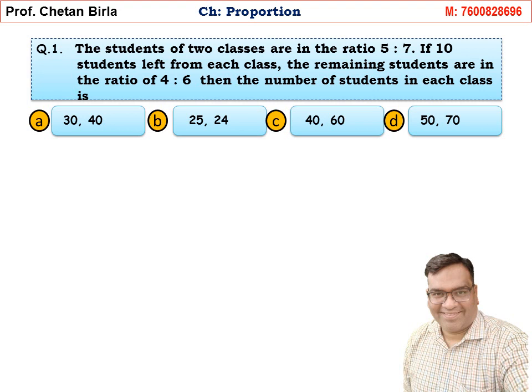Question 1: The students of 2 classes are in the ratio 5 is to 7. If 10 students left from each class, the remaining students are in the ratio of 4 is to 6. Then the number of students in each class is — Options A, B, C, D.